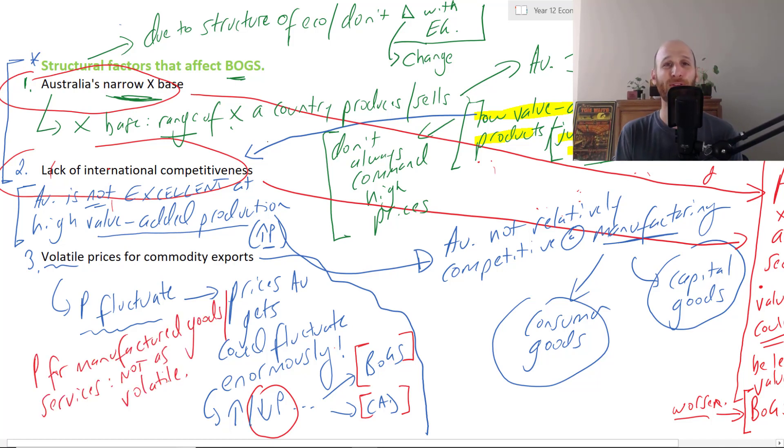The prices for manufactured goods and services are not as volatile. They might actually be more supportive for a positive BOGS balance and also a smaller current account deficit. So these are the three structural factors, the kind of permanent factors in the Australian economy that affect the level of the balance of goods and services.